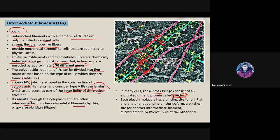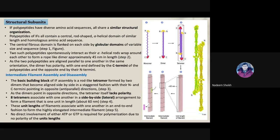Plectin is a protein identified using antibodies with a fluorescent tag. When you use those antibodies with the fluorescent tag, gold dots become visible — these antibodies identify the presence of plectin and confirm that it is connecting the two cytoskeletal elements.